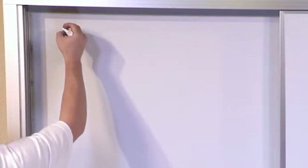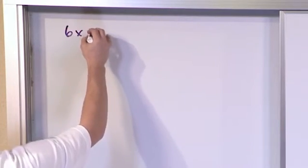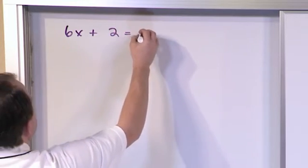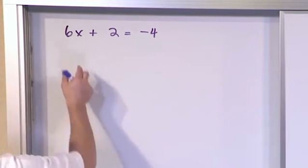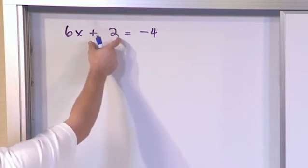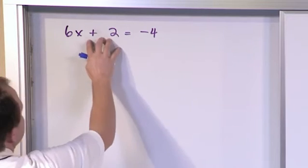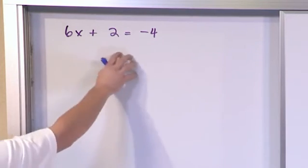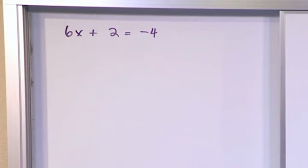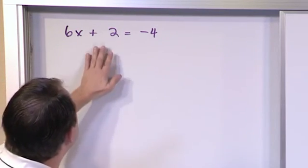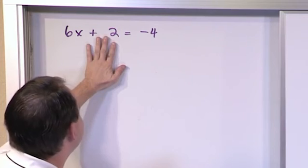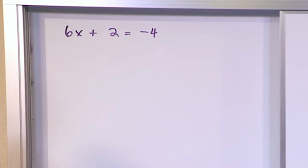All right. In the next problem, we have 6x plus 2 is negative 4. 6x plus 2 is negative 4. So we have the same sort of problem. We have multiplication going on here and we have addition. In general, you're going to want to get rid of the addition first if it's kind of written like this at the same level. You're kind of going backwards unwrapping that present so to speak. And the first step is to get rid of this 2 that's sitting off by itself. So we want to subtract 2 from both sides. Now up until this point, I've been...